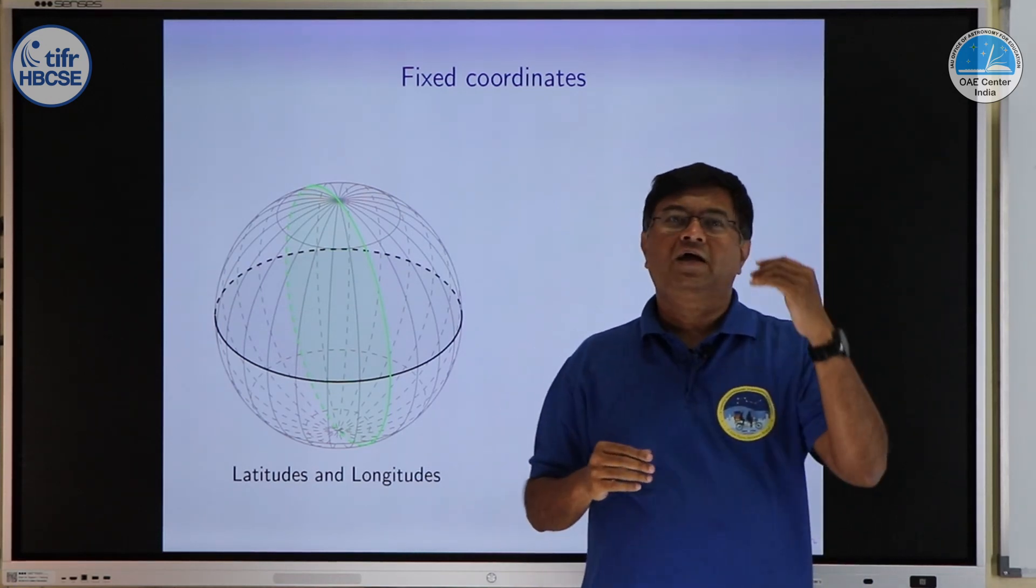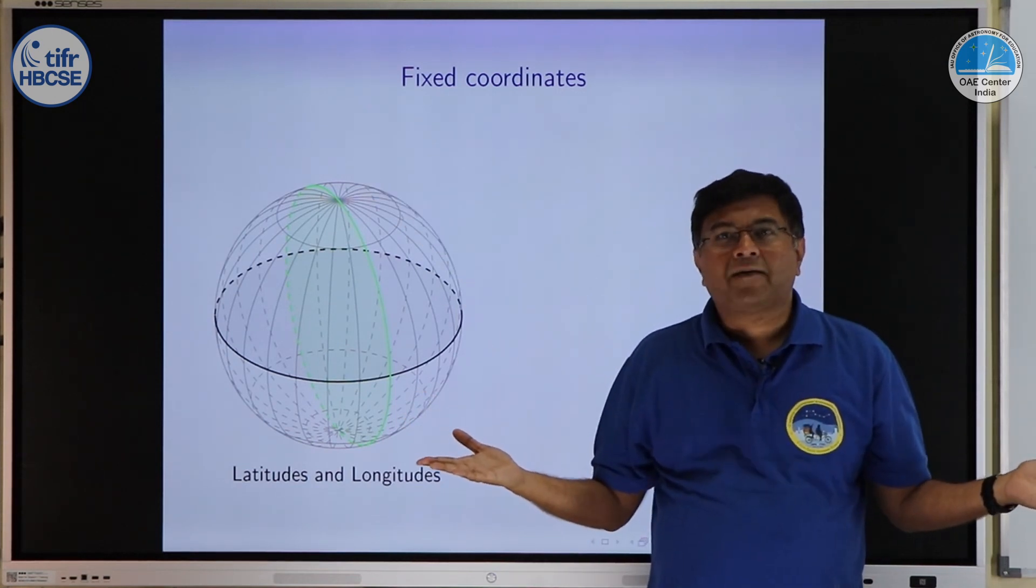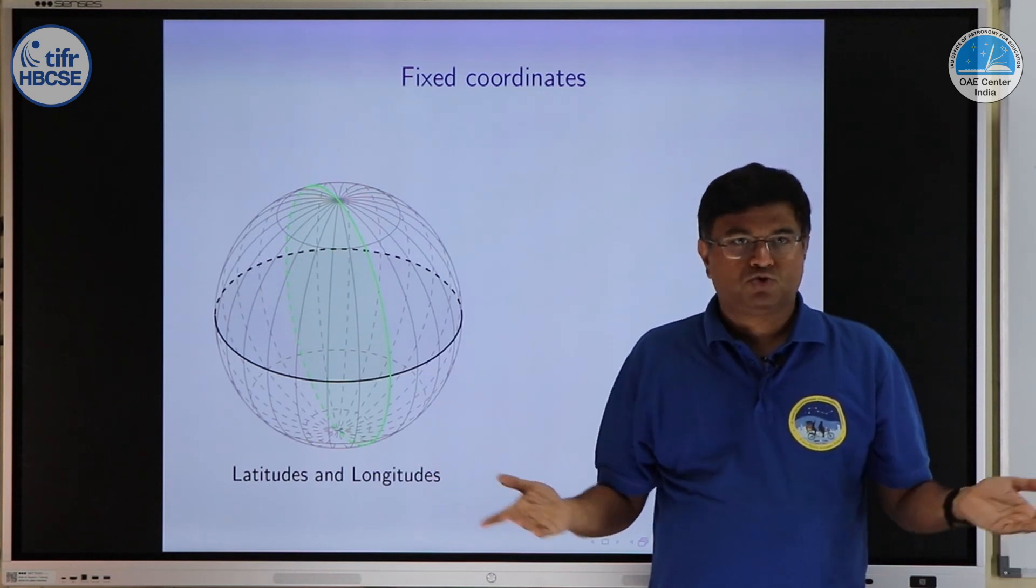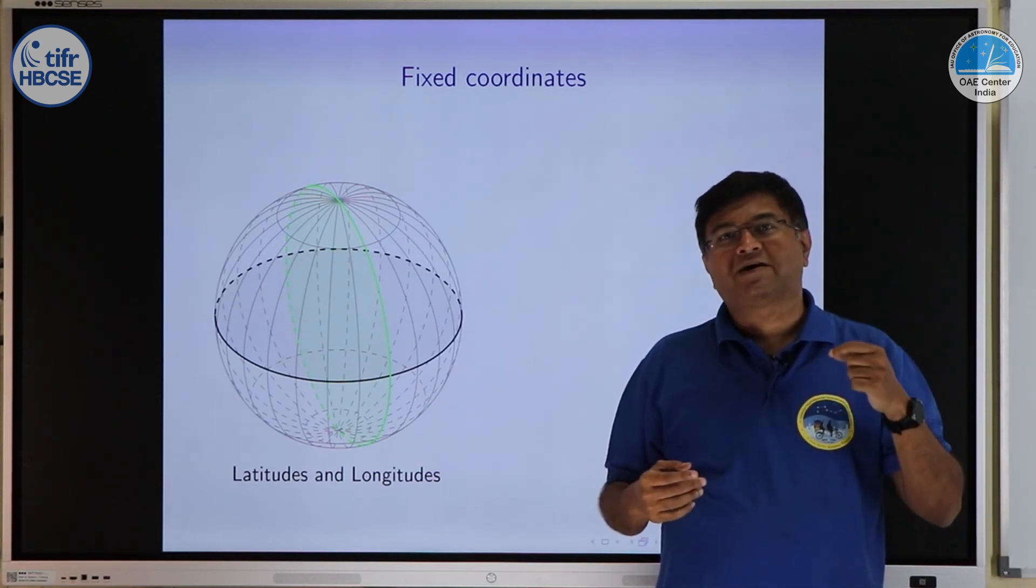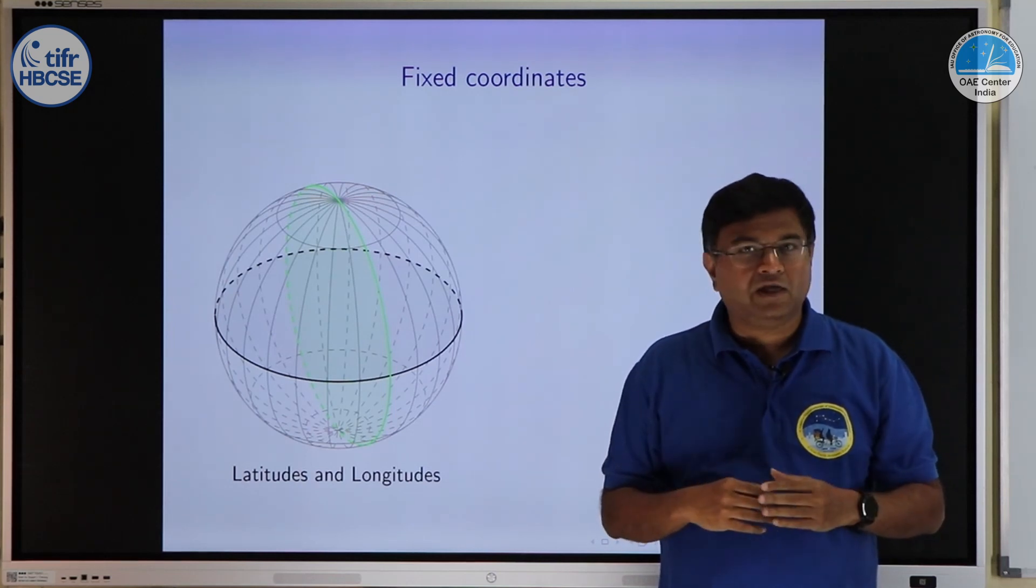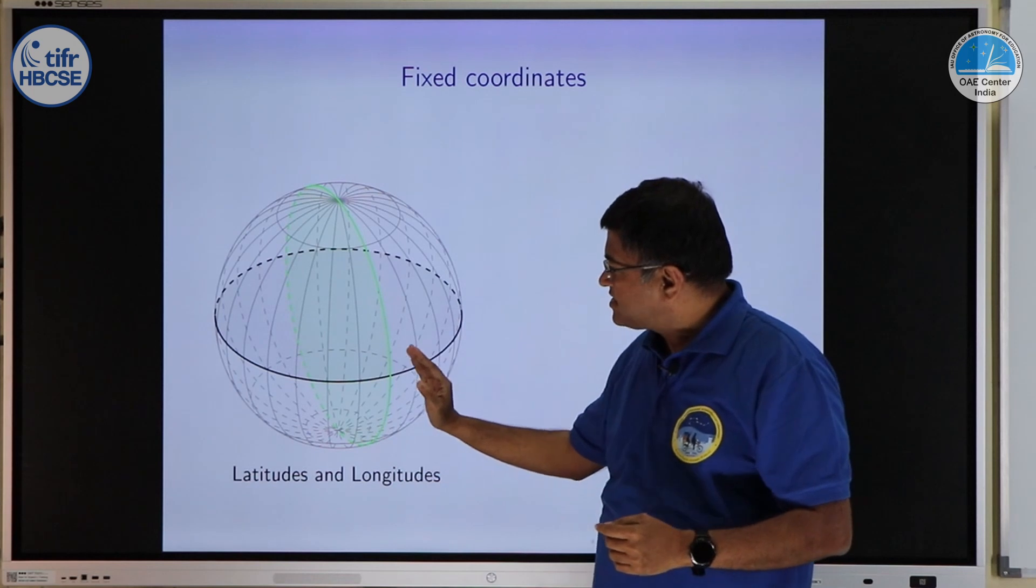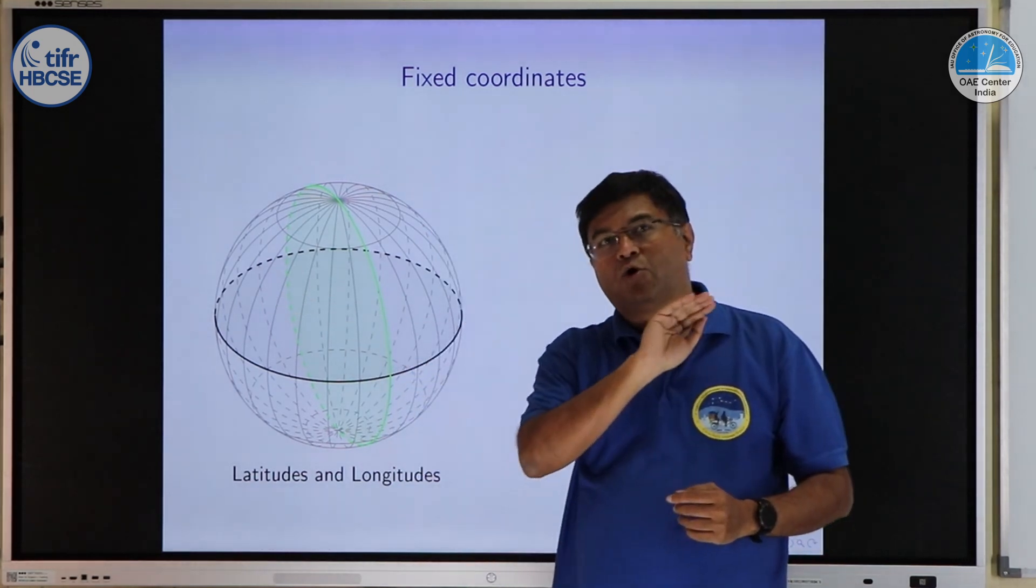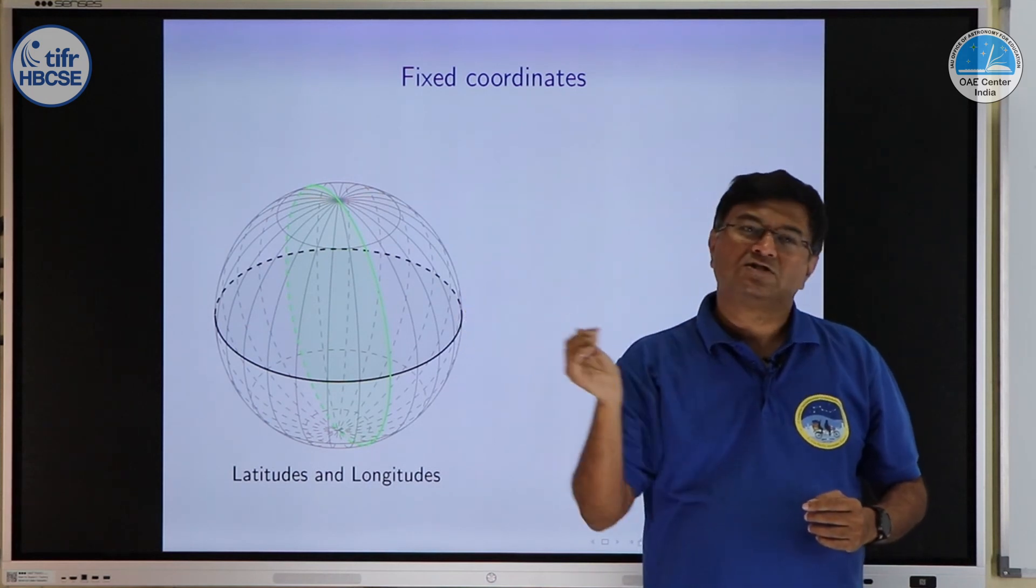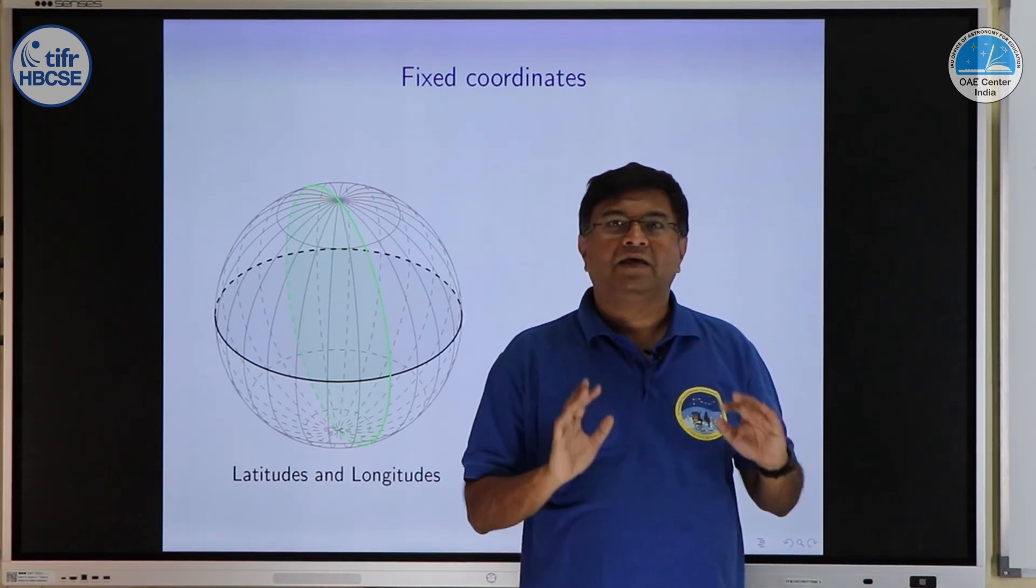For longitudes we take some reference circle. In general all longitudes we may think are equal. So, just for our convenience we have taken as reference the longitude which passes through Greenwich town in UK. And from that reference circle we start measuring east or west. We go all the way 0 to 180 east, 0 to 180 west. We are going to use a very similar system in the sky.